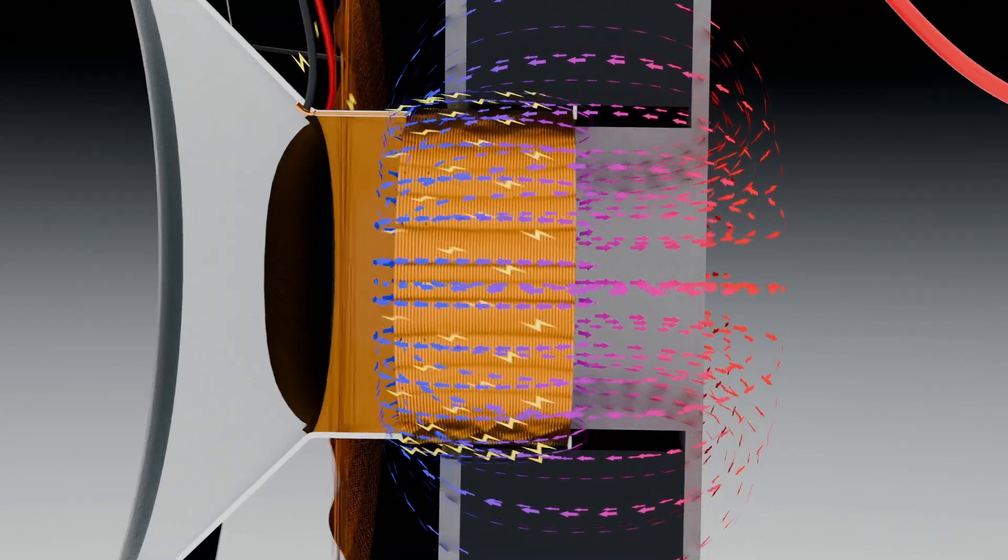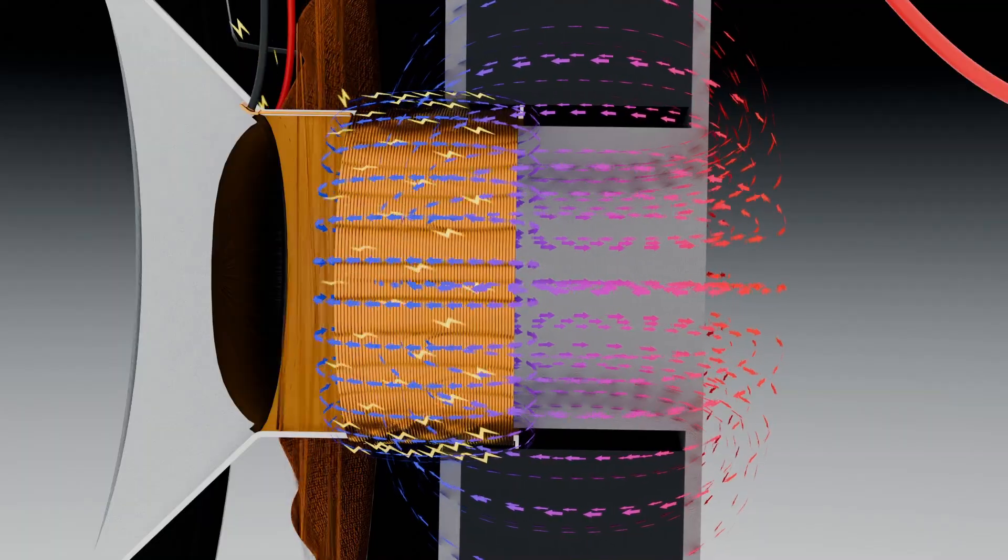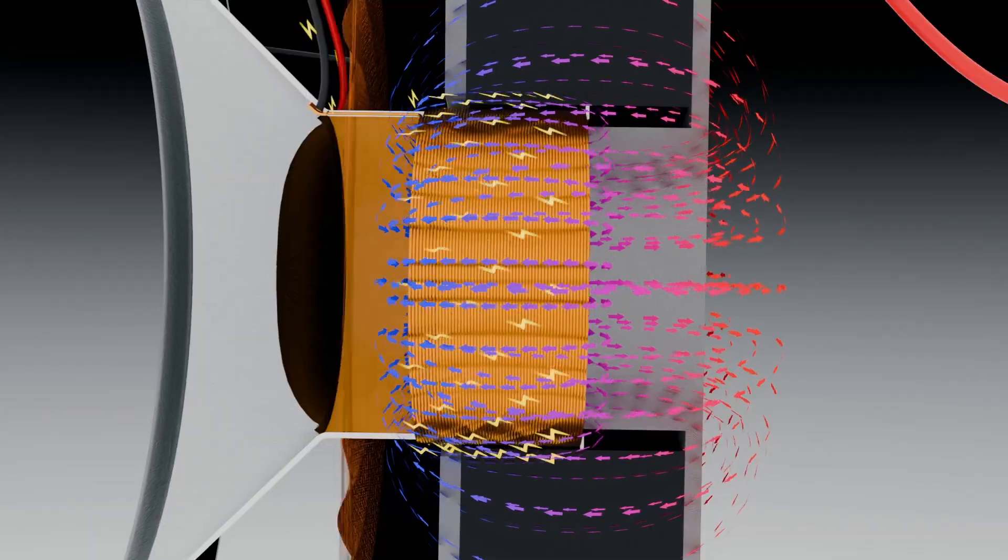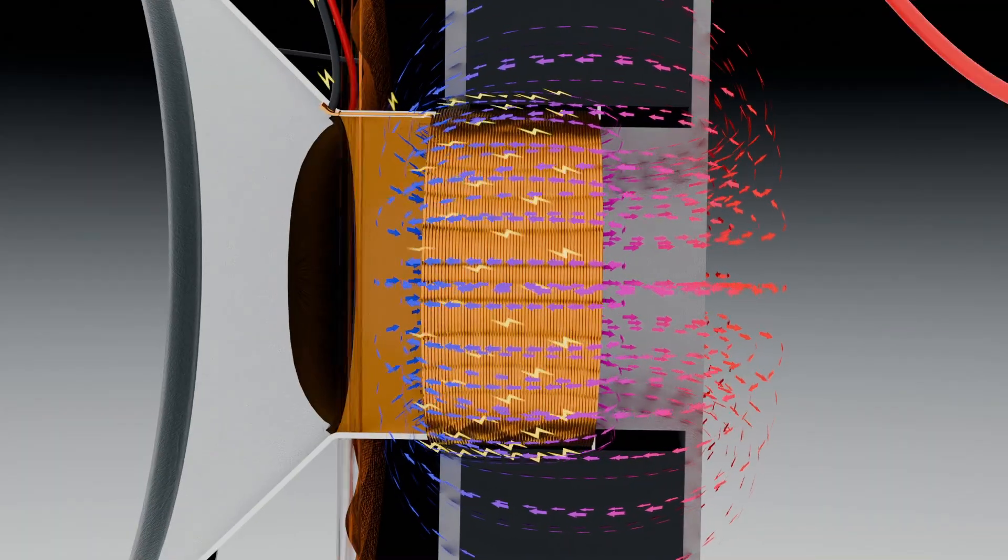When a repulsive force is produced, the coil along with the cone moves forward, away from the magnet. When the force is attractive, the coil is pulled closer to the magnet, moving the cone backward.